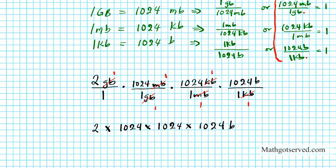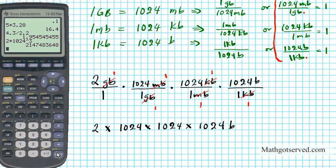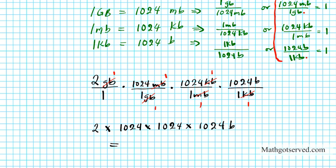Using our calculator, this is 2 times 1,024 raised to the third power, which equals 2,147,483,648. So 2 gigabytes is equal to 2,147,483,648 bytes. So there goes your final answer.